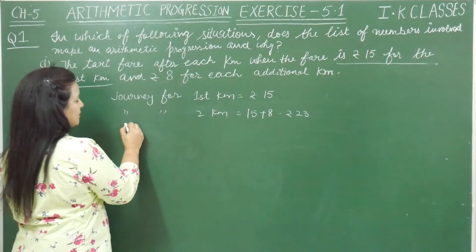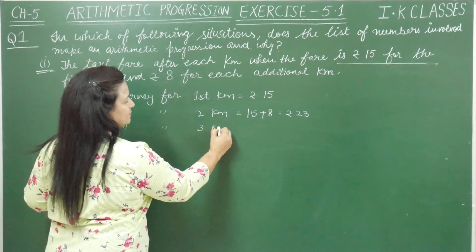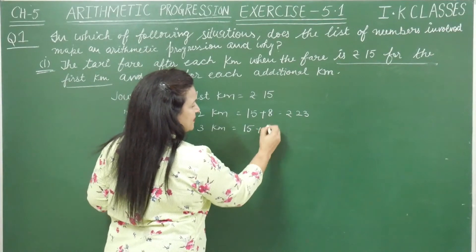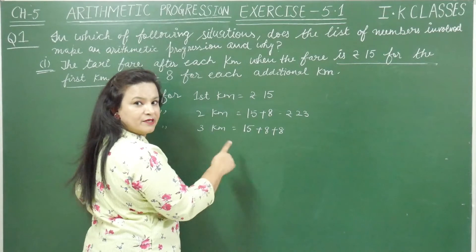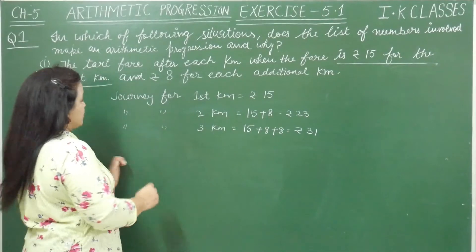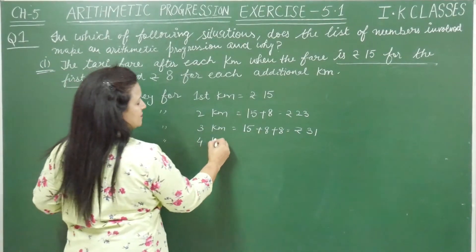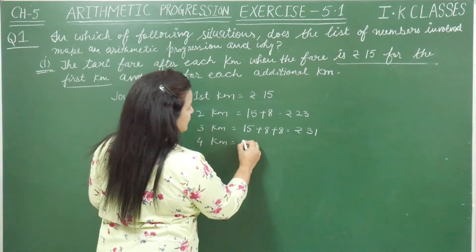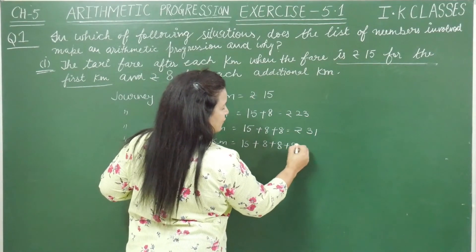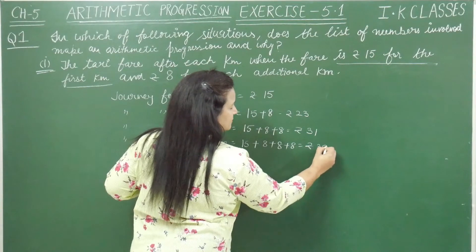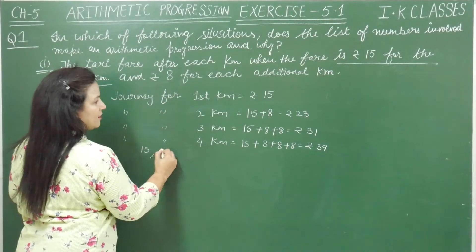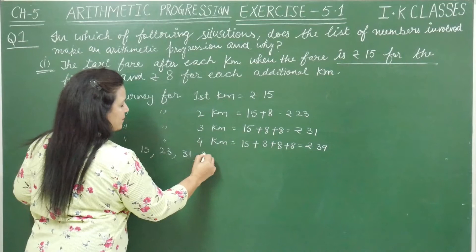Journey for 3 kilometers: rupees 15 for first kilometer, rupees 8 for second, rupees 8 for third — that is rupees 31. Journey for 4 kilometers: rupees 15 for first kilometer, 8 for second, 8 for third, 8 for fourth — that is rupees 39. So we got numbers: rupees 15, rupees 23, rupees 31, and rupees 39.